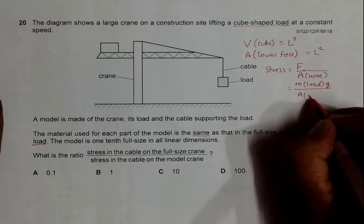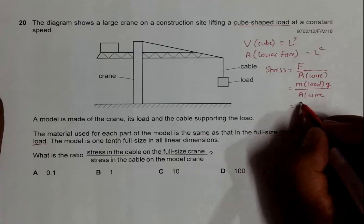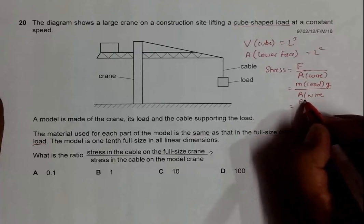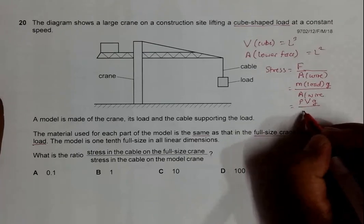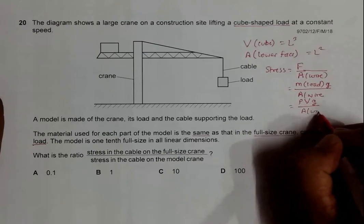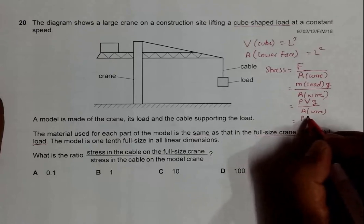It will be equal to ρL³g divided by the area of the wire. The wire area will be π times the diameter of the wire squared divided by 4.